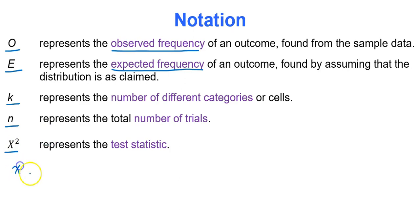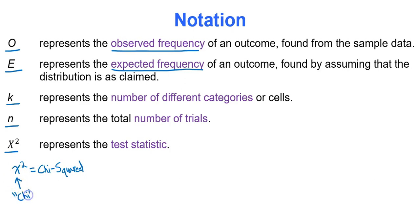It's called chi-squared — the test statistic. The x-looking thing is actually the Greek letter chi. Still learning Greek to this day.